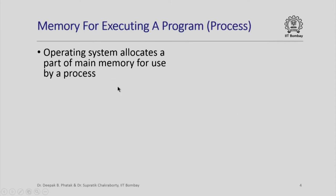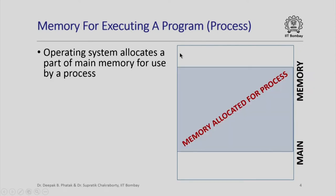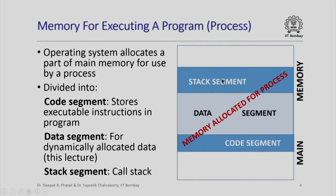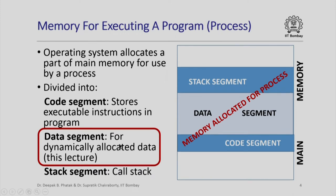If you recall, we had said earlier that when a program is executing — in other words, when a process is running — the operating system allocates a part of the main memory for use by the process. We had also seen that this memory is actually divided into three segments: the code segment, which stores the executable instructions; the stack segment, which stores the call stack and the activation records; and the data segment. We had said we would look at how this data segment is used later, and now the time for that has come. In this lecture and the next, we are going to see how this data segment is used for storing dynamically allocated memory locations.